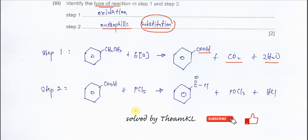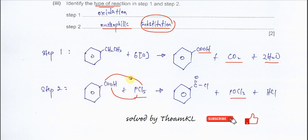For Step 2 — the substitution reaction — if we use PCl5: PCl5 provides two chlorines. One chlorine reacts with H to form HCl; the other binds to the acyl carbon to form the acyl chloride. The remaining PCl3 combines with the oxygen to form POCl3. That is the equation for Step 2 using PCl5.